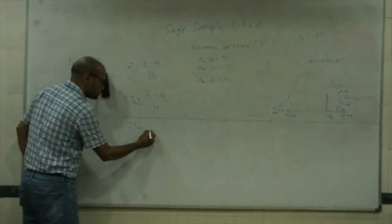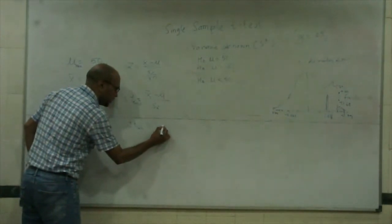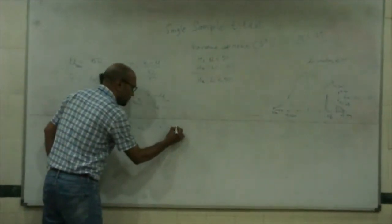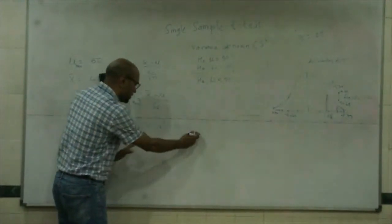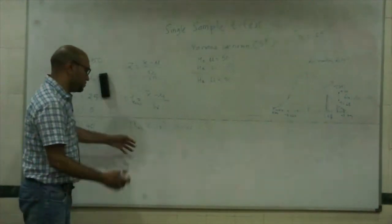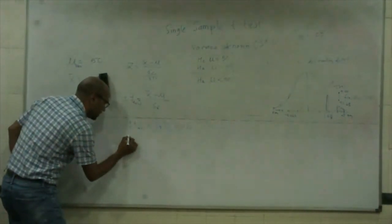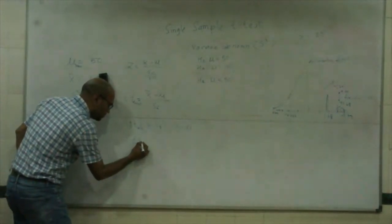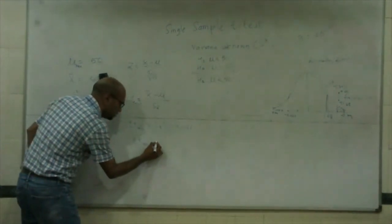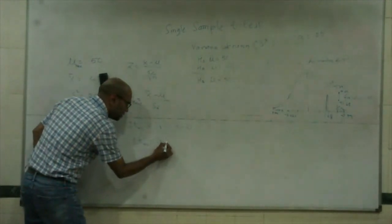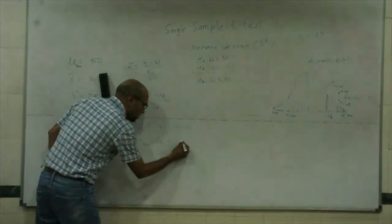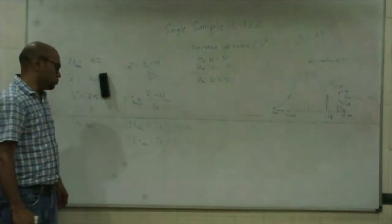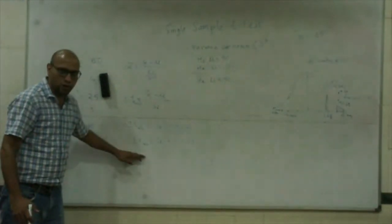This equals X bar minus mu. If I reverse the sides and do some smart manipulation, I can write this as plus minus T alpha by 2 times S X bar plus X bar equals mu.